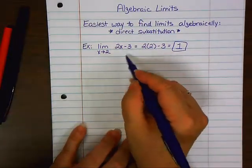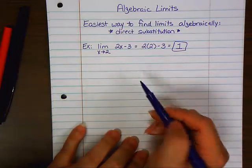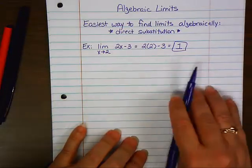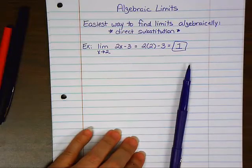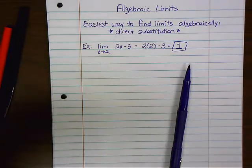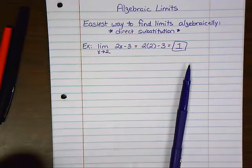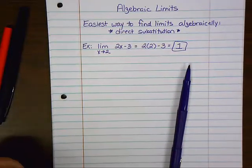Let's think about this graphically. What kind of equation is 2X minus 3? Linear. Does every point on a linear graph approach the same point? Yeah. And isn't that point the Y value there? So that's why the limit happens to be the Y value. That's why I plugged it in.